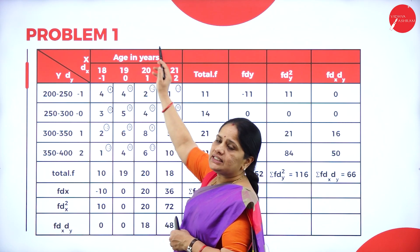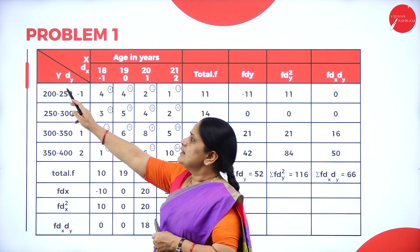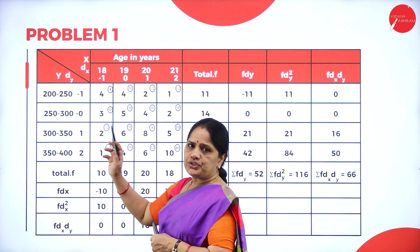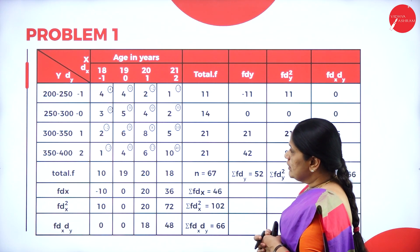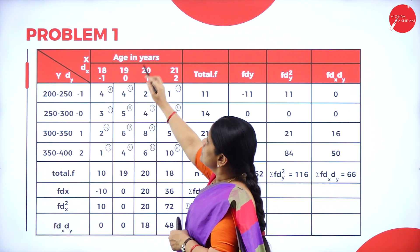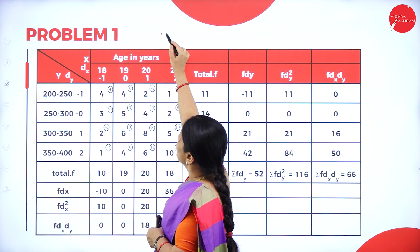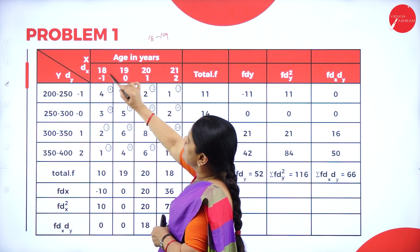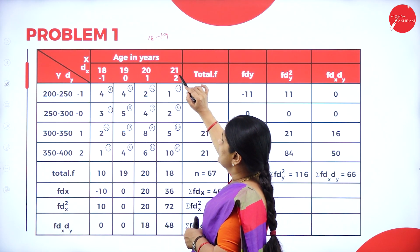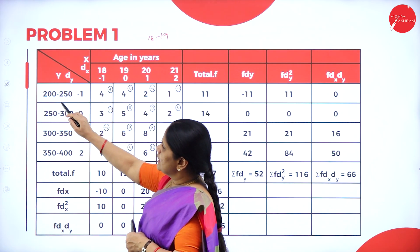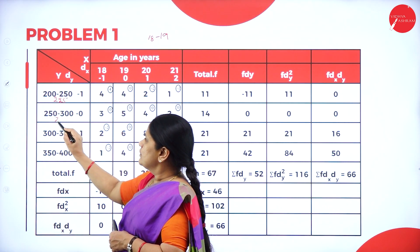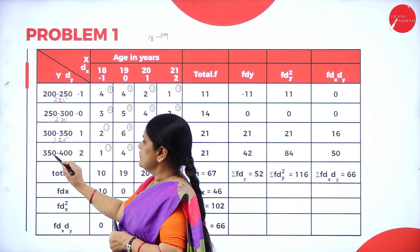In the first row I have written the age in years — the x values. The y values are the marks scored by the students: class intervals 200 to 250, 250 to 300, 300 to 350, and 350 to 400. The next row is dx — deviation from x. I have taken the assumed mean as 19, so: 18 − 19 = −1, 19 − 19 = 0, 20 − 19 = 1, 21 − 19 = 2. For the y values, the midpoints are 225, 275, 325, and 375.